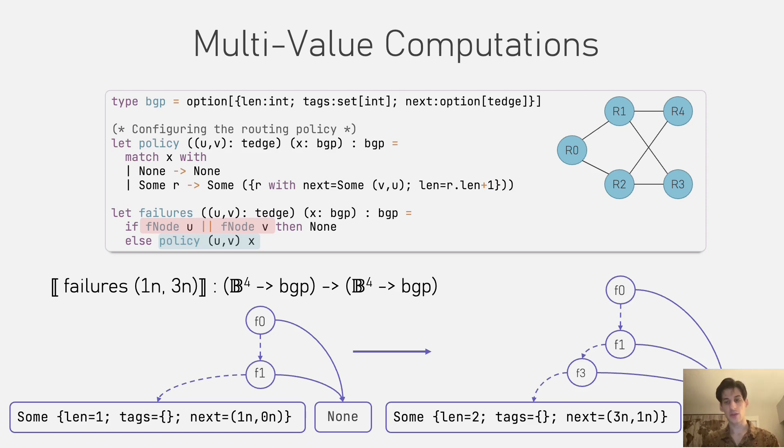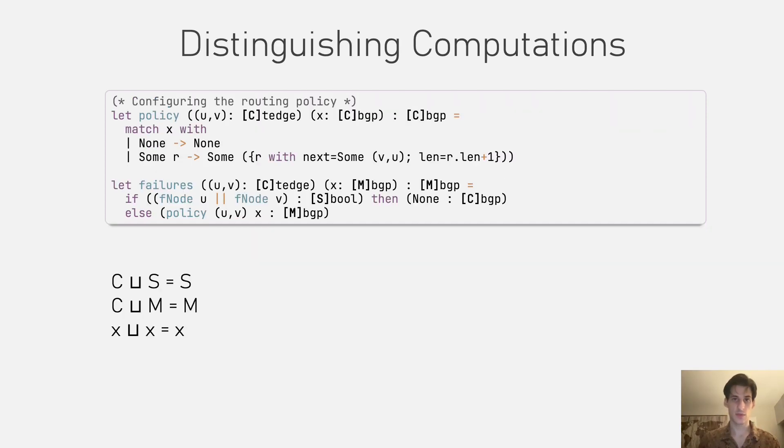Given such a diagram as the input to the function failures, it will transform into a new multi-terminal BDD by performing a symbolic computation on the decision nodes of the diagram and a concrete computation on the terminal nodes. To distinguish between the different types of computations, we leverage the type system.